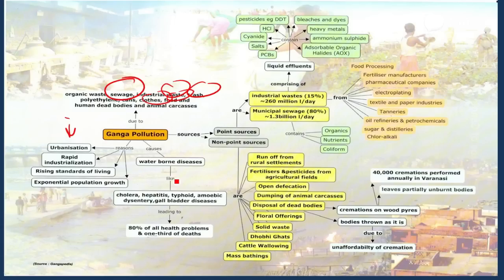Now let us look at the various point and non-point sources which are adding pollutants to the Ganga River. Point sources refers to the sources of pollutants which are added directly to the Ganga River. Non-point sources are the sources of pollutants which contribute pollution indirectly through other means.